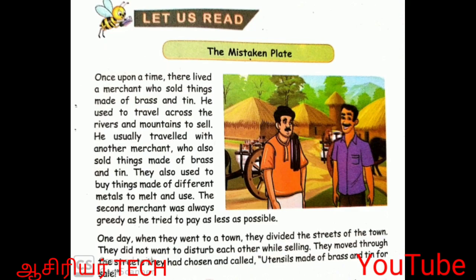They also used to buy things made of different metals to melt and use. The second merchant was always greedy as he tried to pay as less as possible. One day when they went to a town, they divided the streets of the town. They did not want to disturb each other while selling. They moved through the streets they had chosen and called.